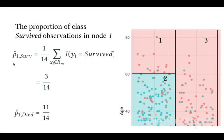So the proportion of survived people in region 1 would be 3 over 14. And similarly we can find the share that died in this node—it's 11 over 14.